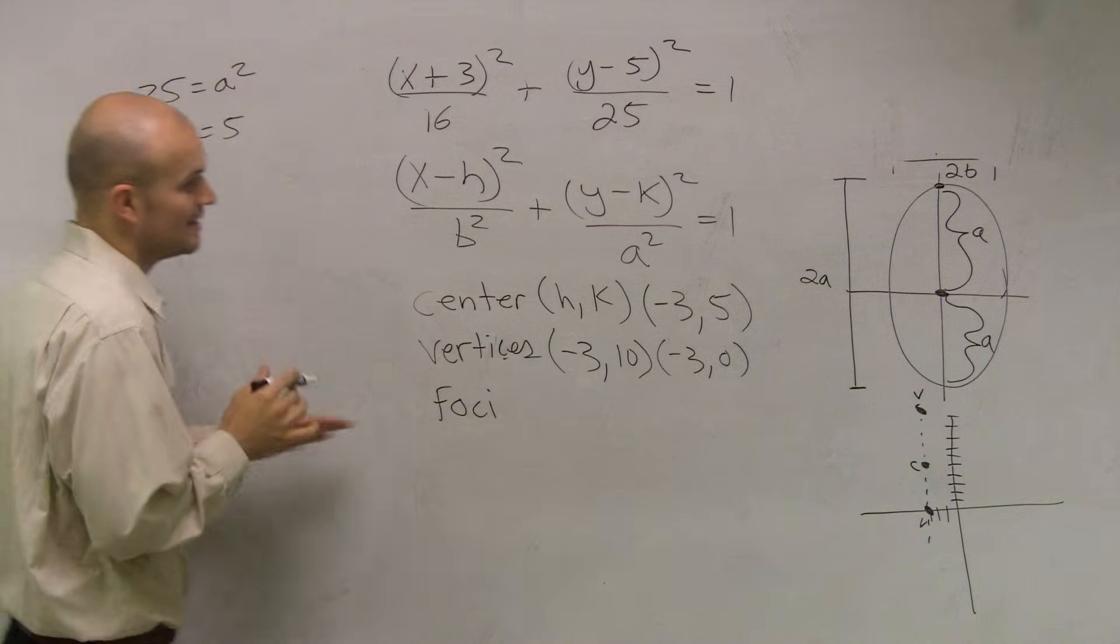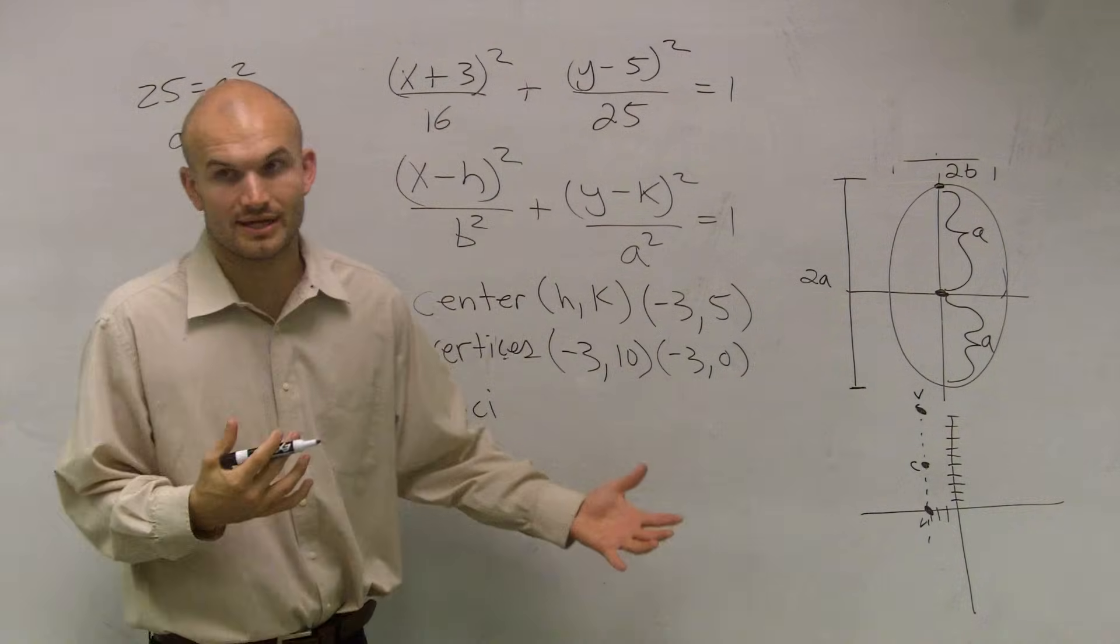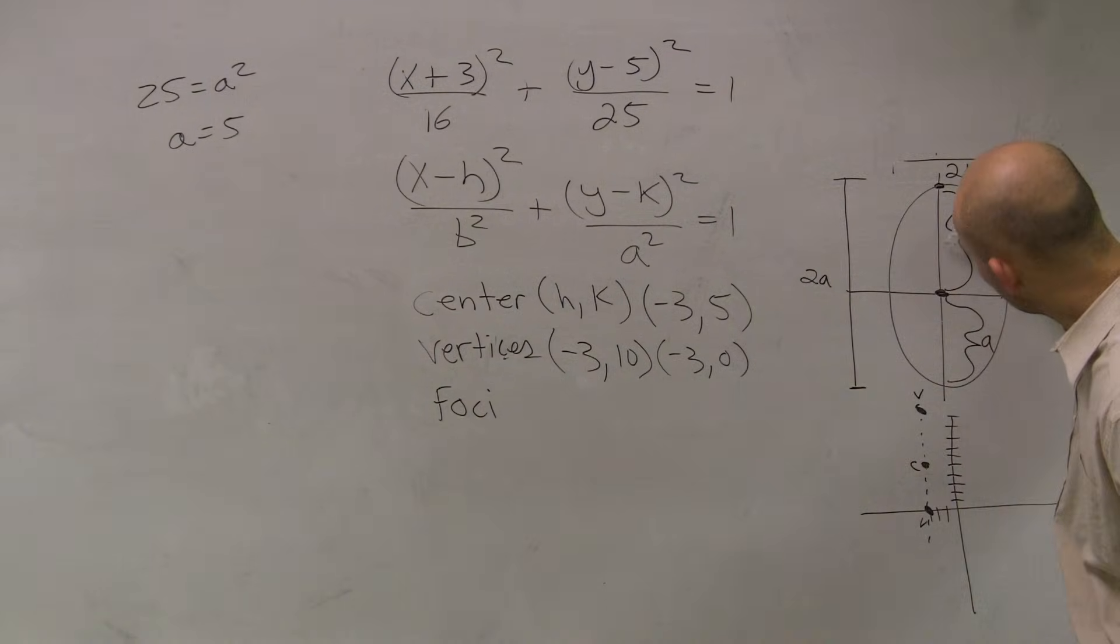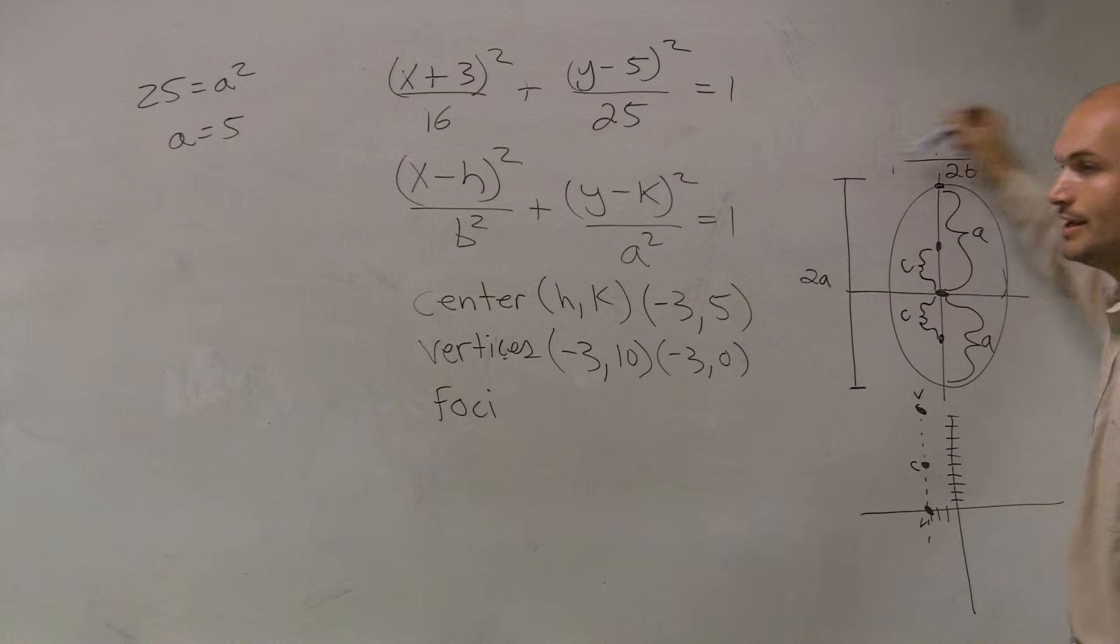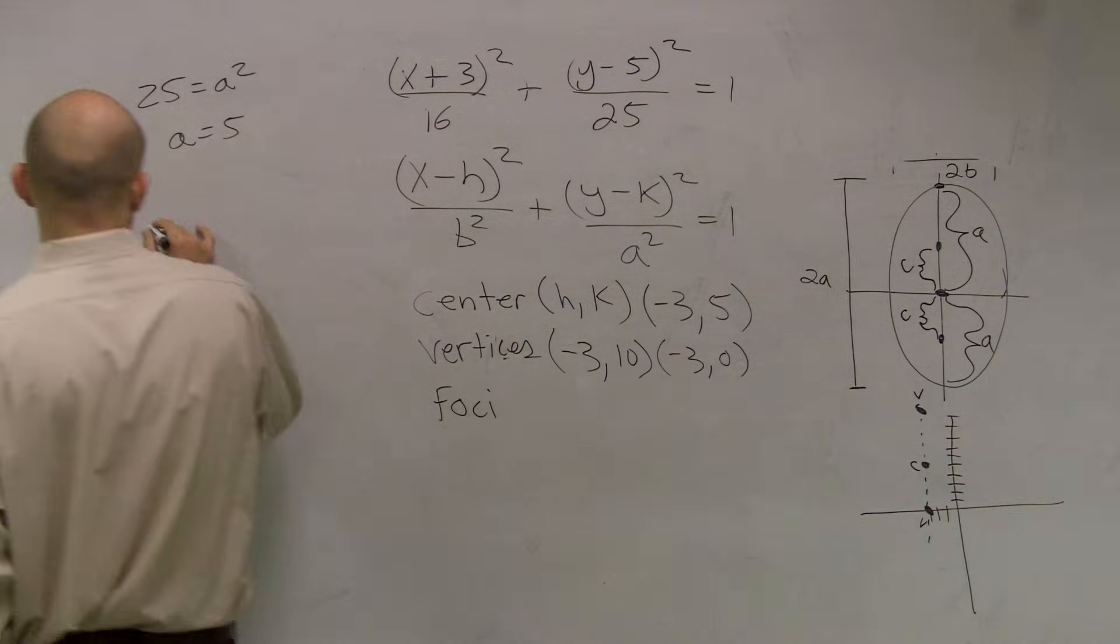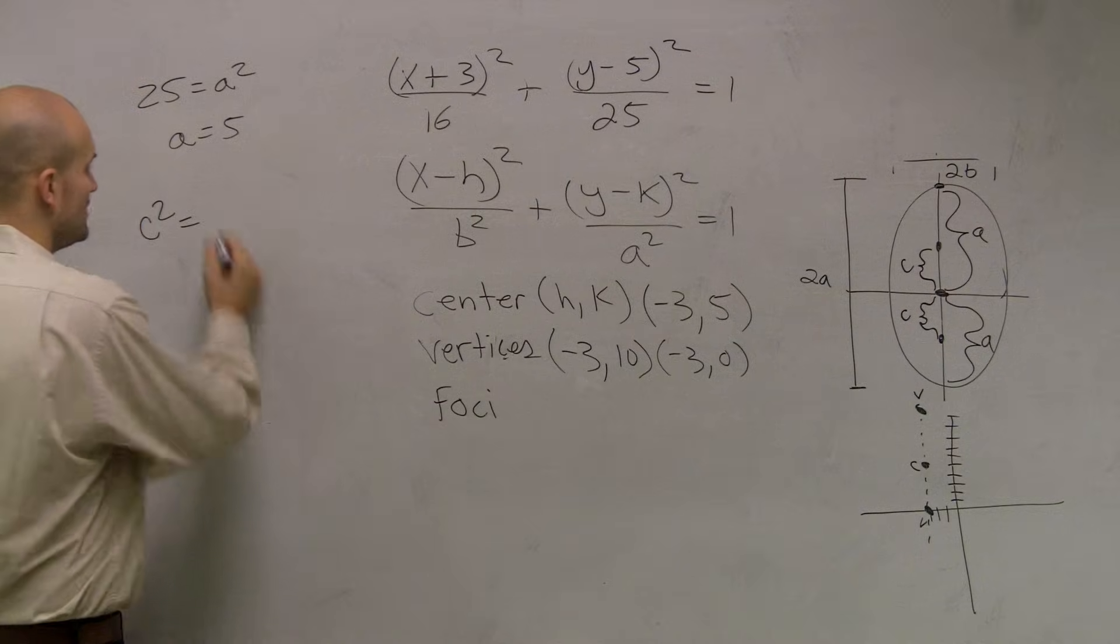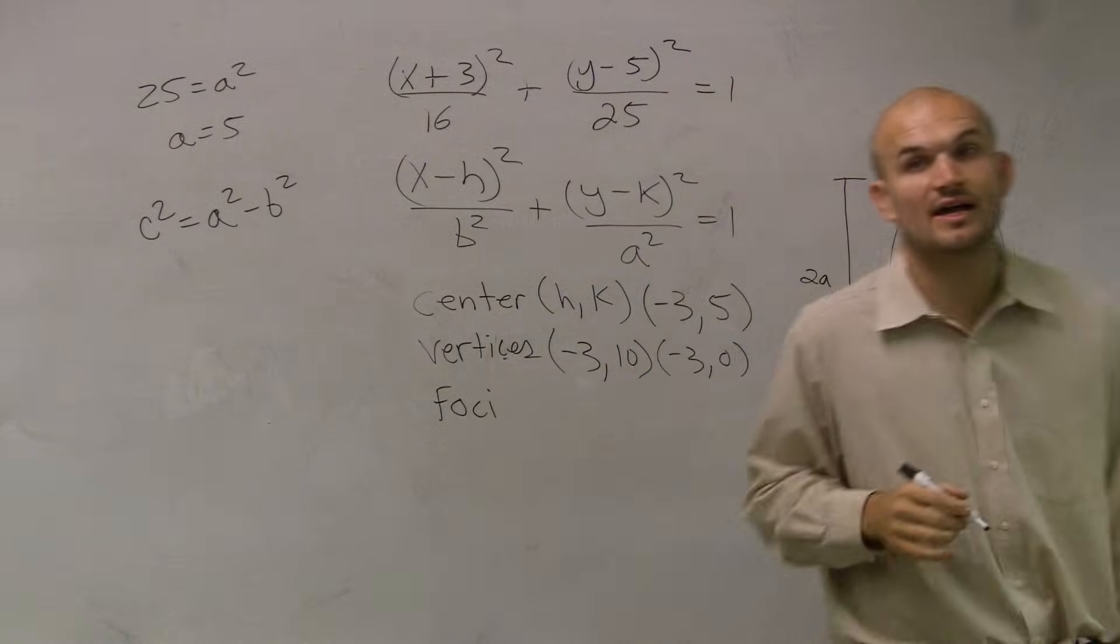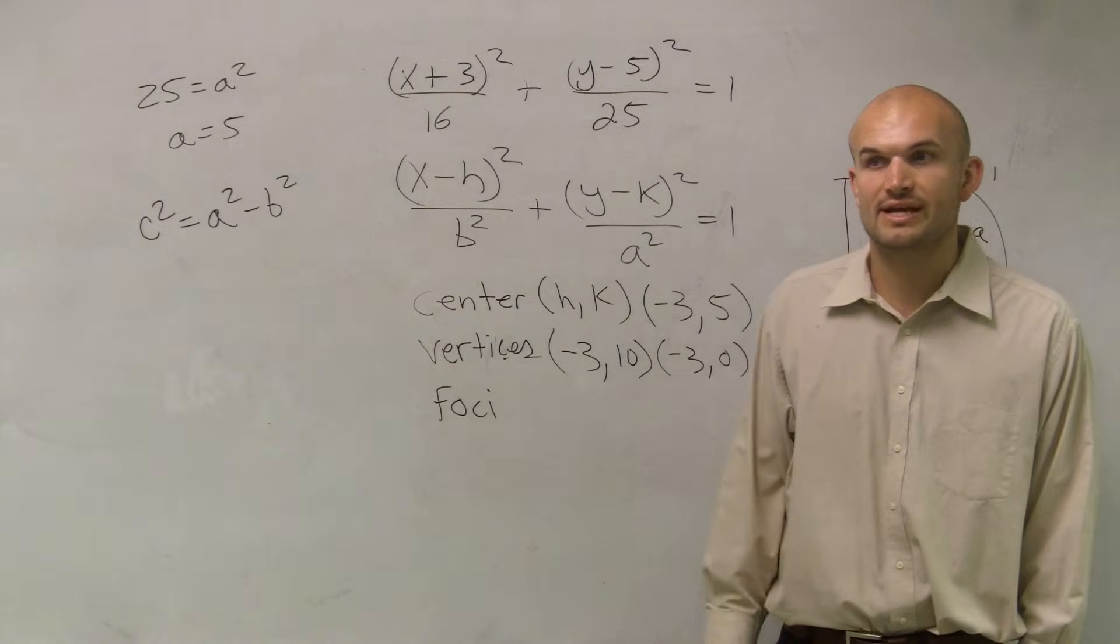So the next thing I want to do is we need to figure out what the foci is. Well, ladies and gentlemen, we have an issue with the foci because the foci, the distance of the foci is c. And the problem with c is we know that here our minor axis is 2b, our major axis is 2a, but we don't know the value of the c. Luckily, we do have a relationship to find the value of c, which is a squared minus b squared. So we can figure out what the value of c is as long as we know what a squared and b squared are.